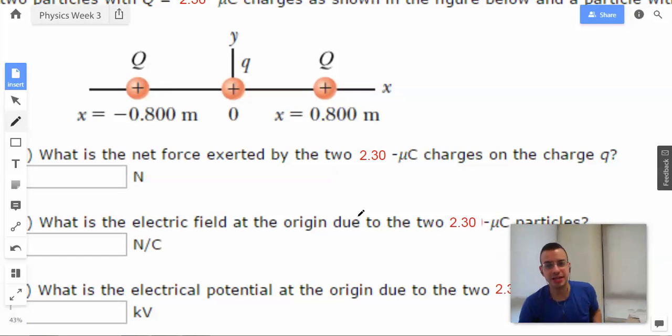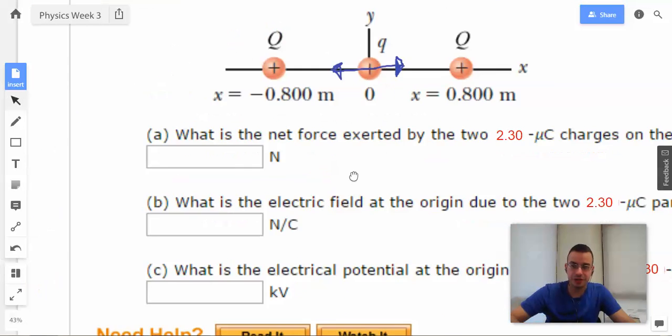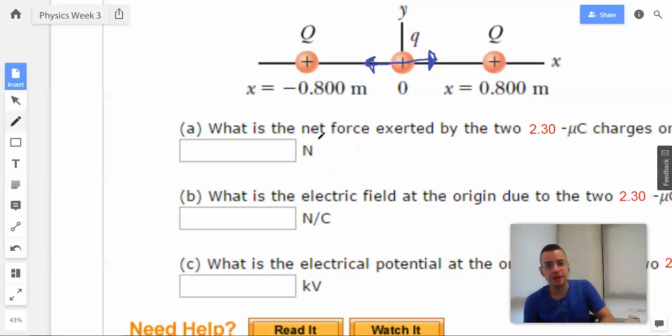So what is the net force exerted by the 2.3 × 10^-6 coulomb charges? The charge on the left will repel and push the particle to the right. The particle on the right pushes left. They're exactly identical, exactly the same distance apart, so since they are vectors, they cancel each other out.